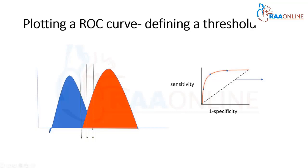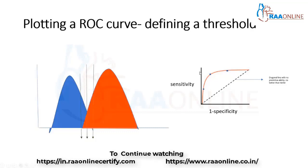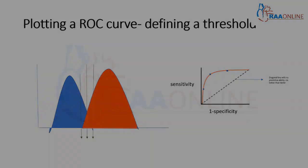The closer the curve comes to the center diagonal, the more useless the test or cutoff — the center point represents 50-50, meaning the result could go either way. You don't need a test that does that. Ideally, you want a curve that goes higher and to the left. Any assay that provides a greater area under the curve by going higher and to the left is the best assay or the best cutoff.